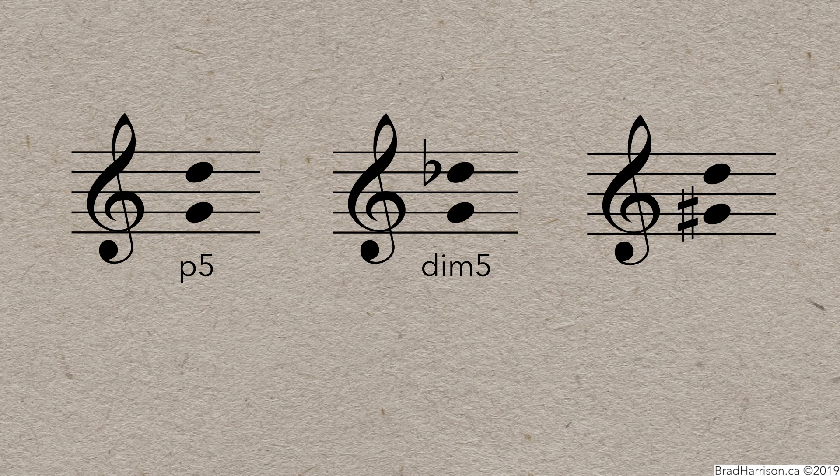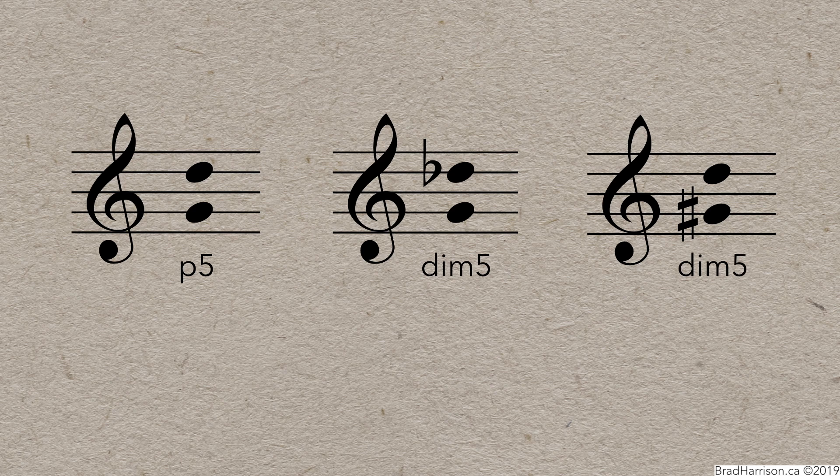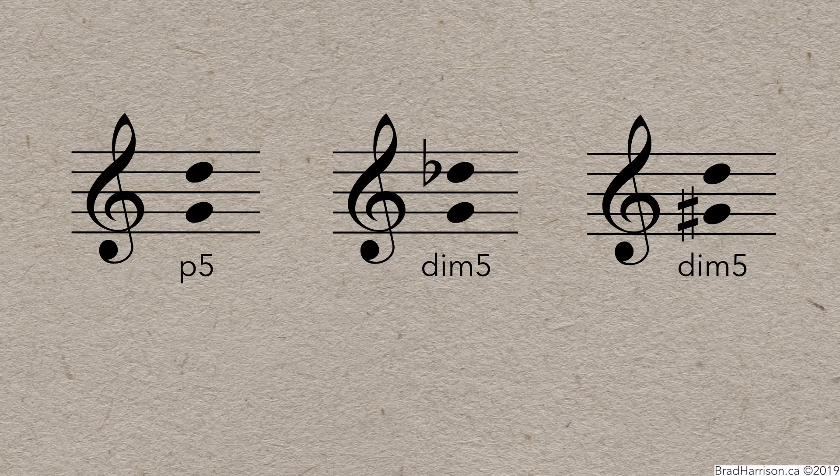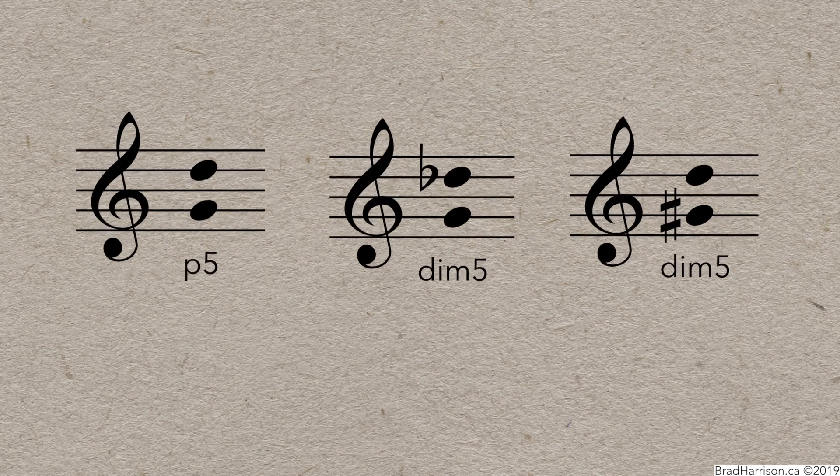The second one is diminished because the lowered top note makes the interval a semitone smaller. The third one is a bit less obvious because there's no G-sharp major scale. But this interval is diminished too. Because raising the bottom note had the same effect as lowering the top note.